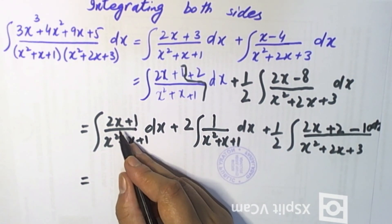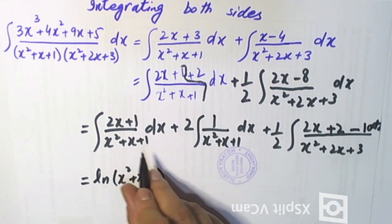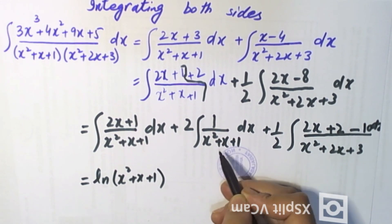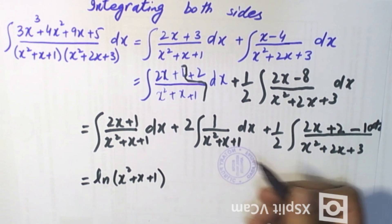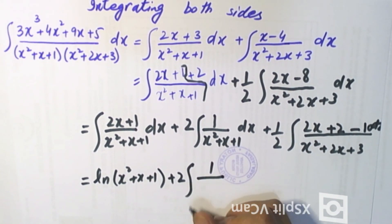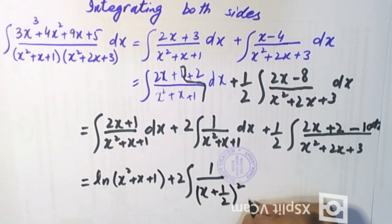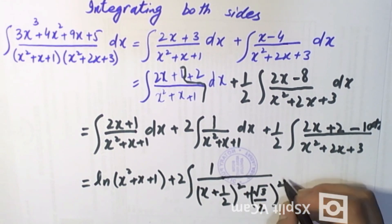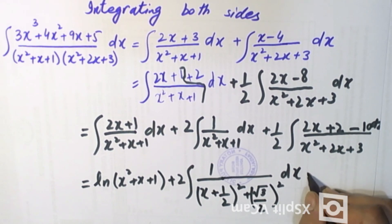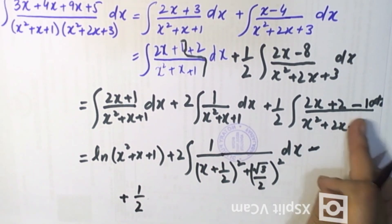Now here, the derivative of the denominator is present in the numerator, so this simplifies directly. The log of (x² + x + 1) integration is complete. Now for the remaining integral, 1 over (x² + x + 1), we divide by 2 and complete the square: (x + 1/2)² + (√3/2)² — this forms a standard tan inverse formula.